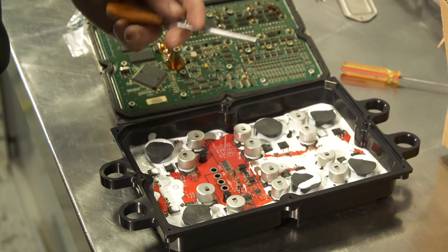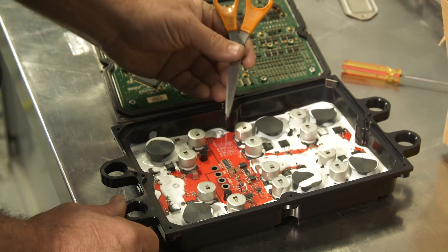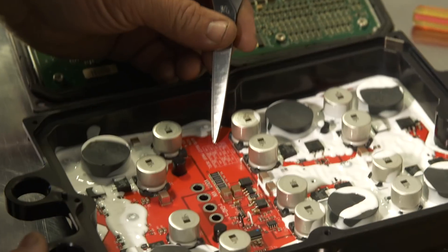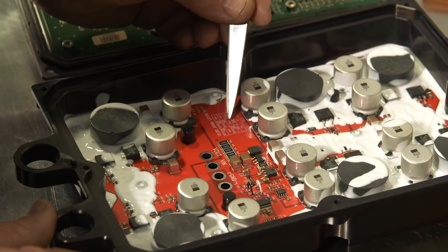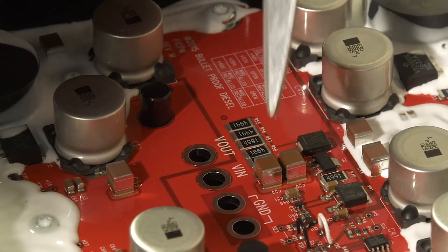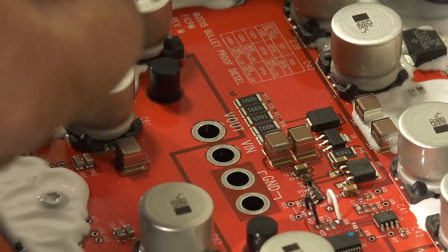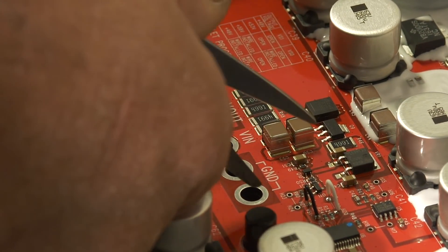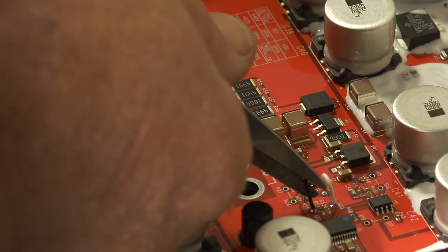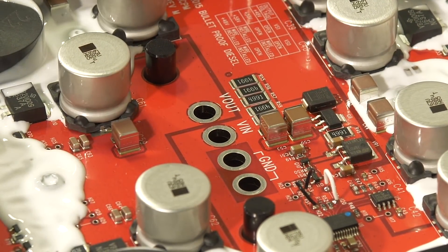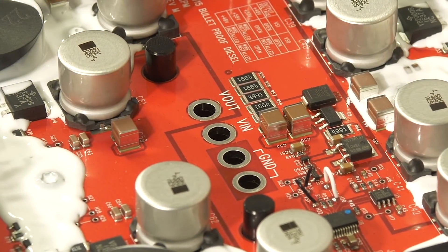In this case, we want 53 volts output. So we come over here to the side where it says 53 volts. It says to open VS1. VS1 is this particular wire right here, which in this case is black in color. And so we will clip that wire, and now we've set it for 53 volts.